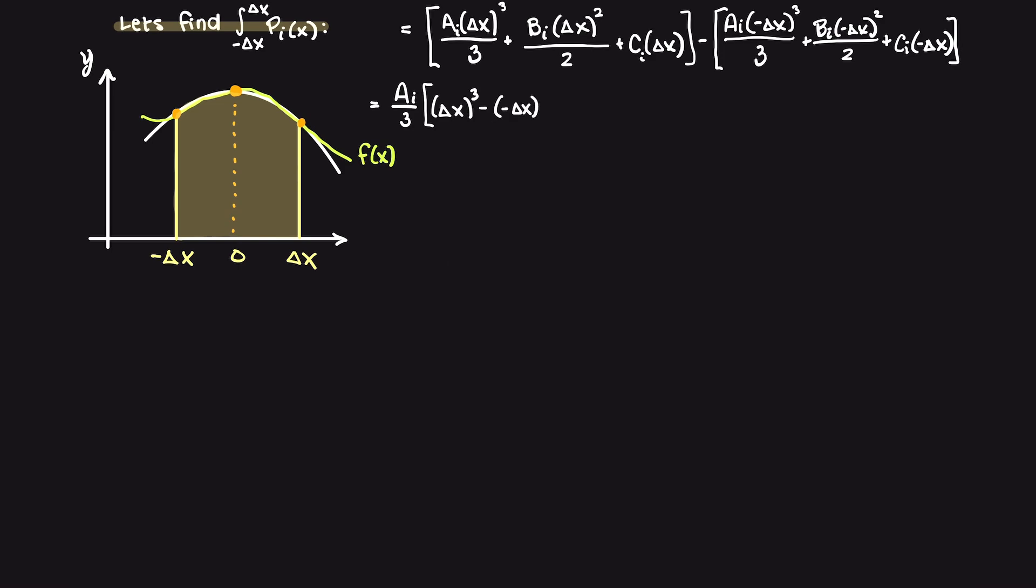From here we can combine our like terms and factor out terms like a over 3, b over 2, and c. Within our brackets, these two terms will become 2 delta x cubed, and we have a subtracting a negative, which becomes positive.